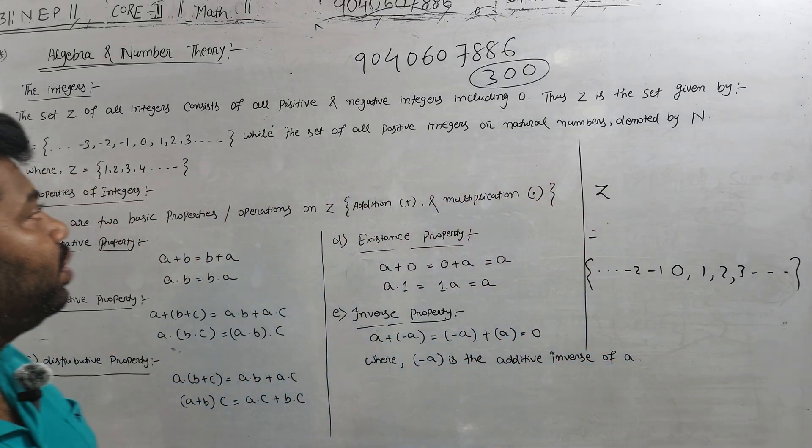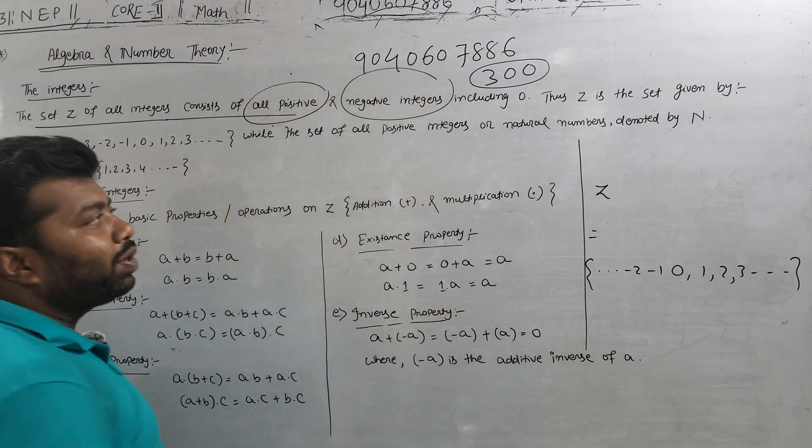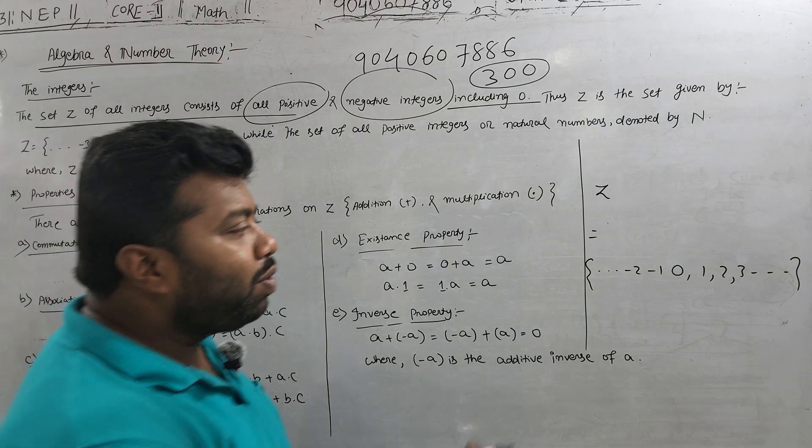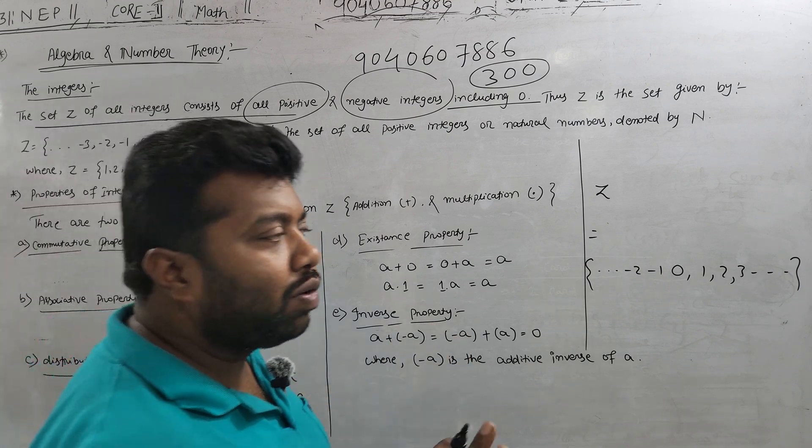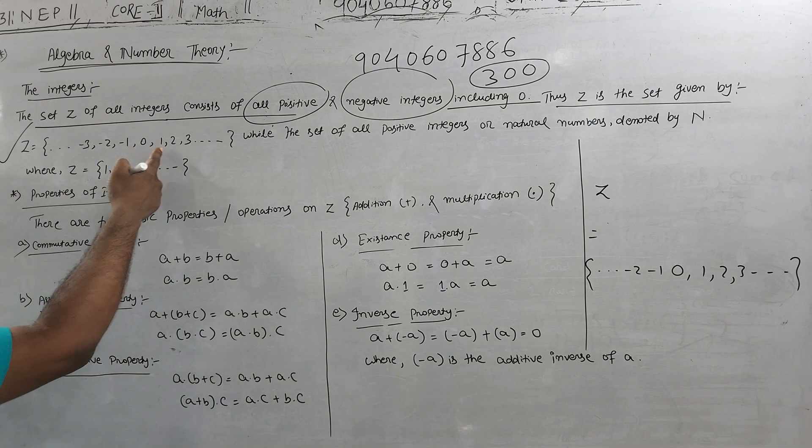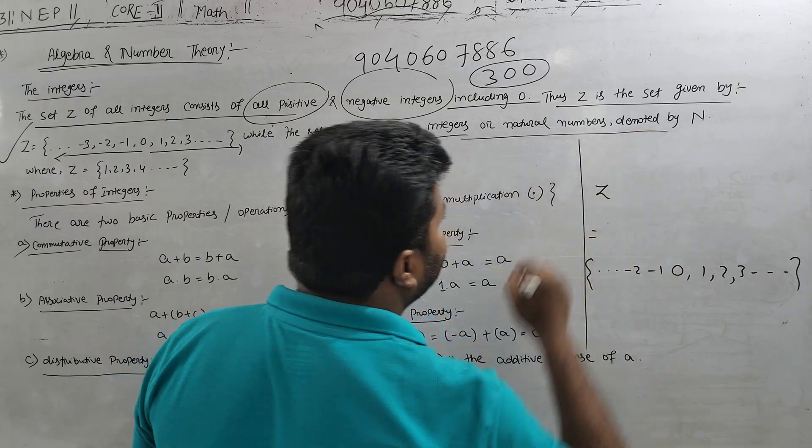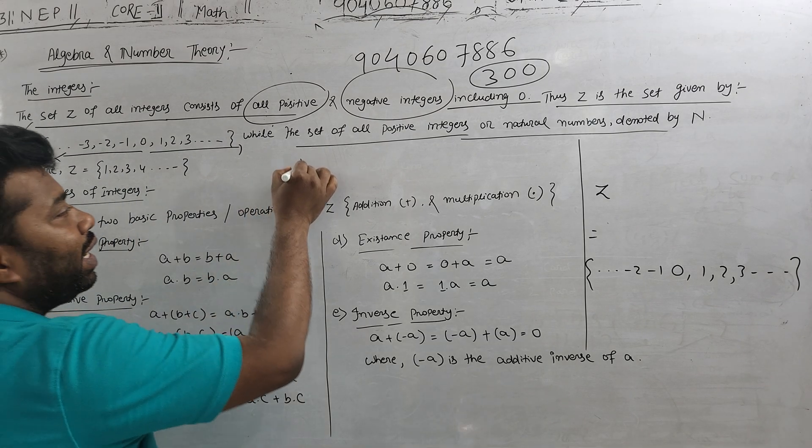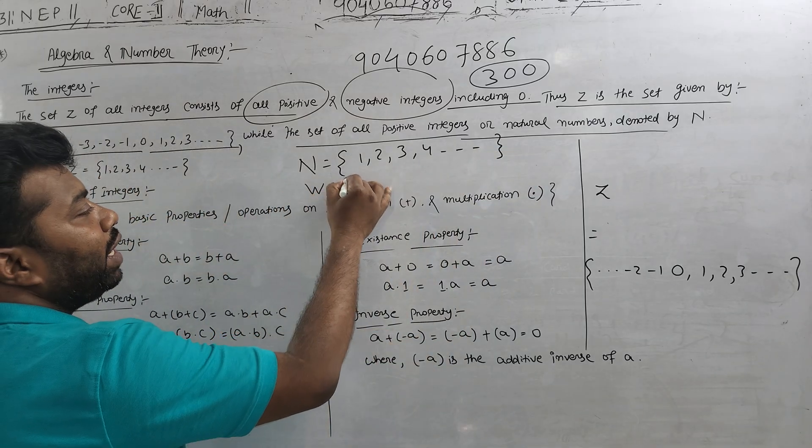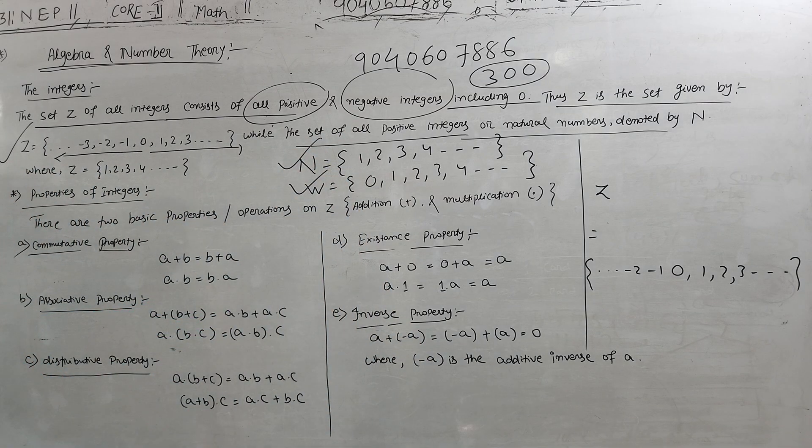So the positive and negative number is the combination of the integer. The set Z of integer consists of all positive and all negative integers, all positive and negative integers including 0. So it is all positive or negative number including 0 and all the whole numbers or fractions including 0.